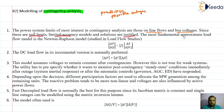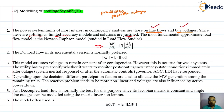Since limited accuracy models are justifiable, the most fundamental approximate load flow model used is the Newton-Rapson method, which we already studied in load flow analysis. We want to monitor line flow and bus voltage, and we get these two quantities with the help of load flow study. Various methods are available — Gauss-Seidel, Newton-Rapson, decoupled method, and fast decoupled method — out of which Newton-Rapson is the most fundamental approximate load flow model.